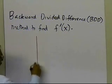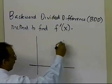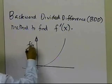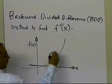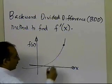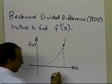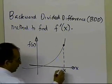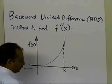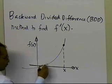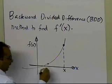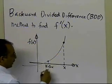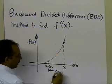We're going to look at it graphically. If I have a function f of x, and somebody is telling me they want to calculate the value of the derivative of the function at a particular point x, rather than choosing a point ahead of x — which is done in the forward divided difference scheme — I'm going to choose a point which is behind x, or less than x, which will be x minus delta x, which basically implies that the distance between the two points is delta x.